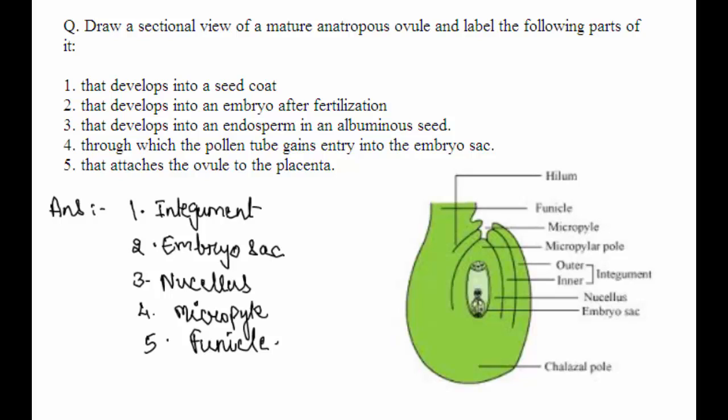Third, the part that develops into an endosperm in an albuminous seed — so this is the nucellus. You need to label this part for the third question. Micropyle is through which the pollen tube gains entry into the embryo sac.